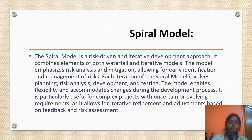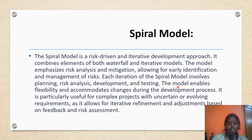In the next slide, we will go through the spiral model — the third kind of model. The spiral model is a risk-driven and iterative development approach. It combines elements of both waterfall and iterative models. The model emphasizes risk analysis and mitigation, allowing for early identification and management of risks. Each iteration of the spiral model involves planning, risk analysis, development and testing. The model enables flexibility and accommodates changes during the development process. It is particularly useful for complex projects with uncertain or evolving requirements, as it allows for iterative refinement and adjustments based on feedback and risk assessment.